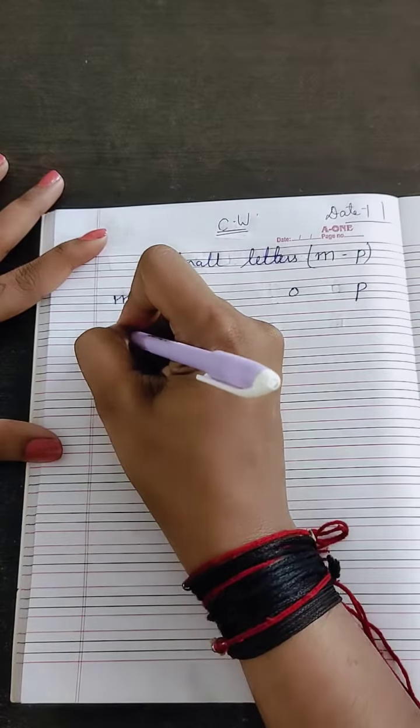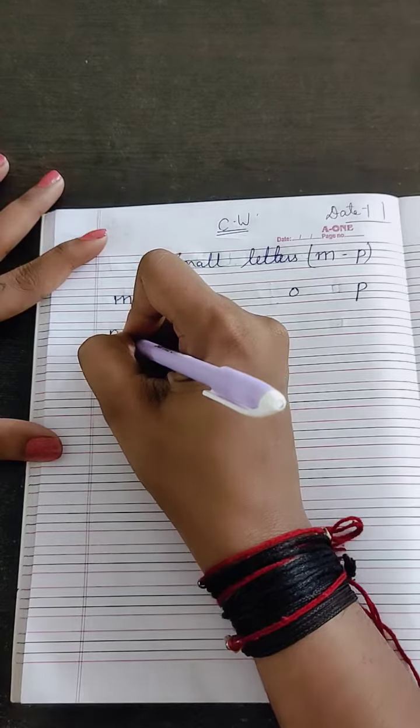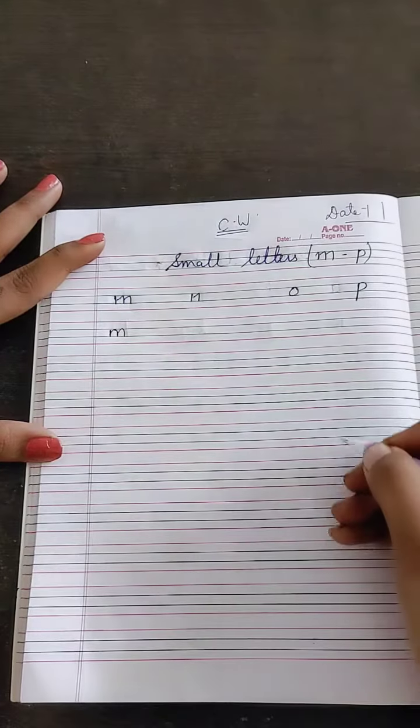Now M for monkey. One standing line and make one curve and another curve.